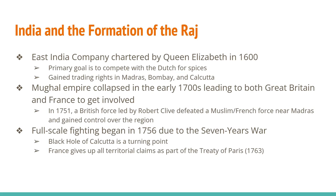Fighting begins five years later as part of the Seven Years War. If you've had American history, you've probably studied the French and Indian War. What a lot of people don't know is that the Seven Years War was a global war — fighting happened in North America, Central America, England, Europe, Africa, and India.